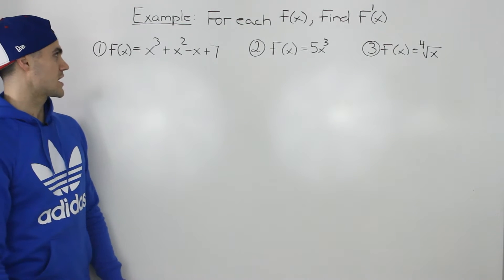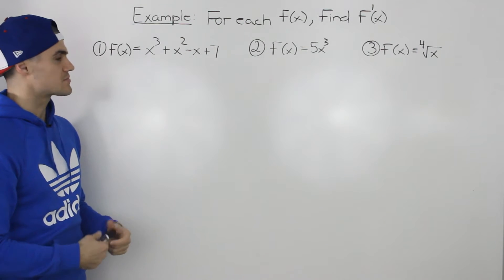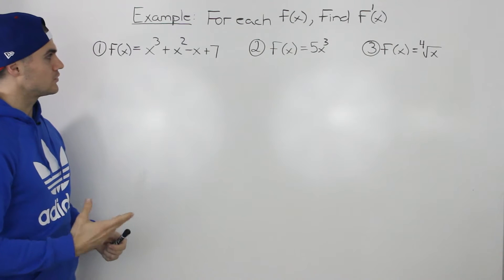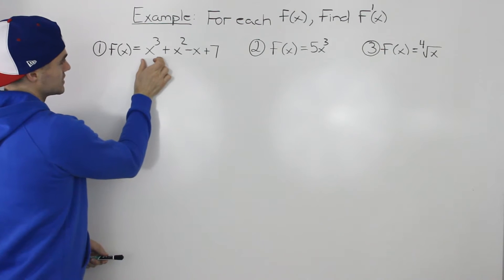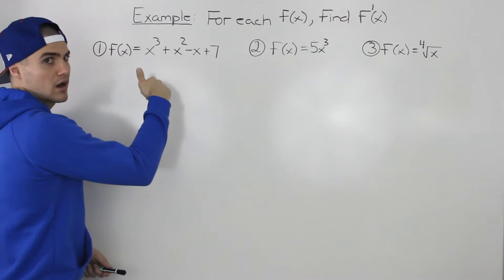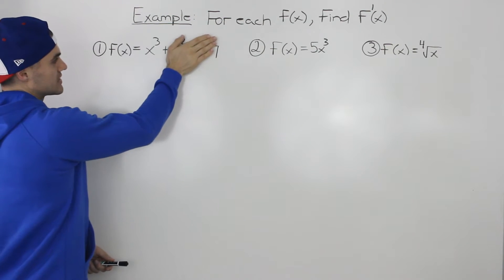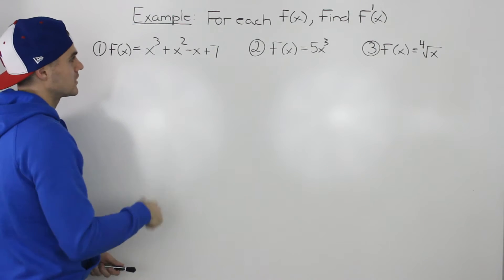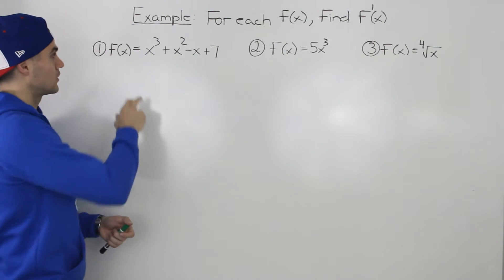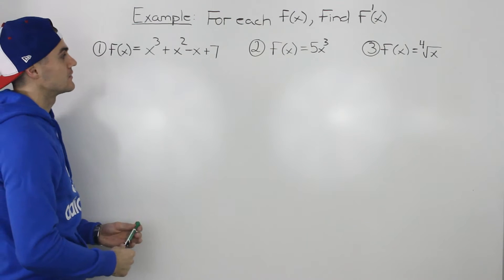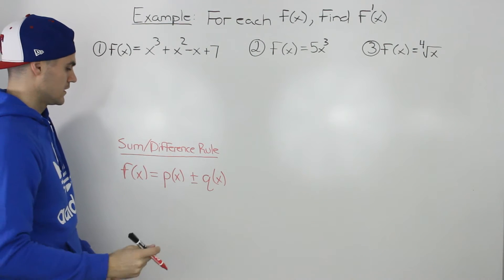Starting off with our first example, we got f of x equals x to the power of 3 plus x squared minus x plus 7. So we have this polynomial with degree 3. Now, so far in the overview video, what we discussed was just dealing with functions in the format x to the power of n by itself, with no other functions added to it. But what if there are multiple functions added and subtracted within f of x? Well, you can deal with each of those separately using something called the sum and difference rule.